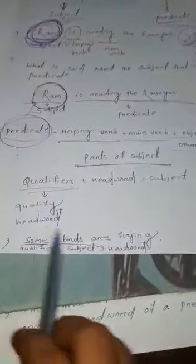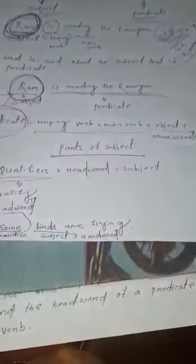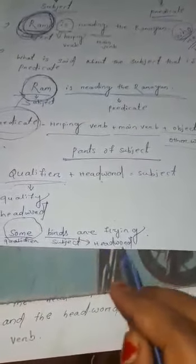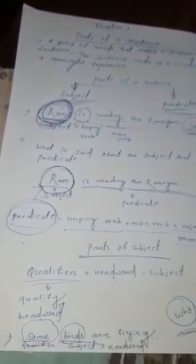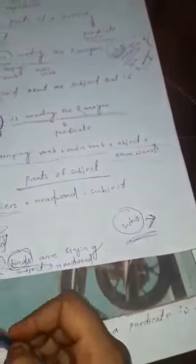Let me give an example: Some birds are flying. Here, 'some' is the qualifier in the sentence and 'birds' is the subject — the headword — in the sentence. To find that birds is the subject, put the WHO question. Birds is the headword of the subject and it is a noun. The headword of a subject is always a noun. Some is the qualifier and birds is the headword.